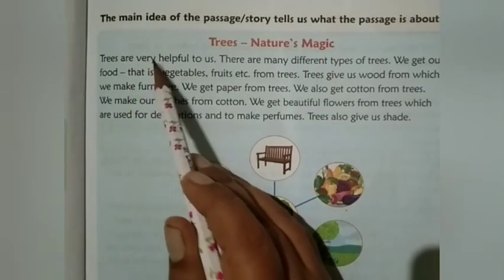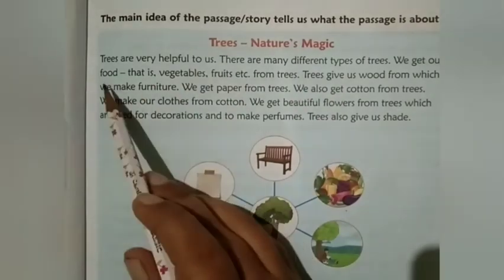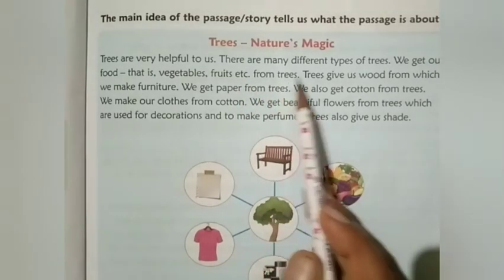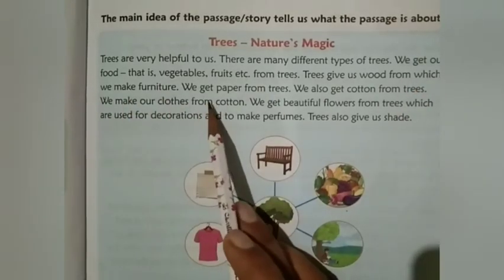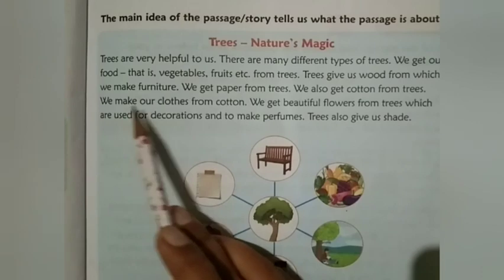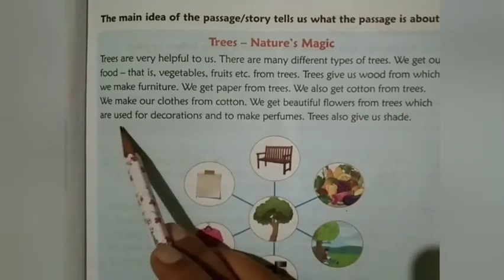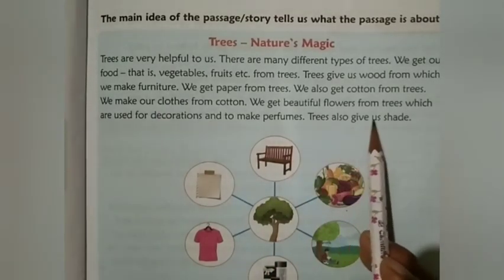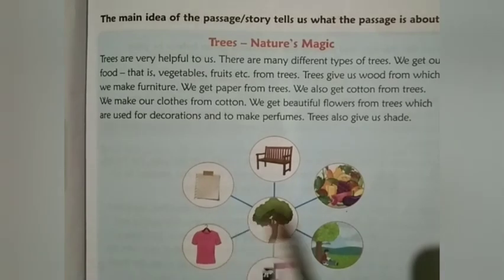Trees are very helpful to us. There are many different types of trees. We get our food — vegetables, fruits, etc. — from trees. Trees give us wood, from which we make furniture. We get paper from trees. We also get cotton from trees, from which we make our clothes. We get beautiful flowers from trees, which are used for decorations and to make perfumes. Trees also give us shade. So this passage is about trees and the uses of trees.